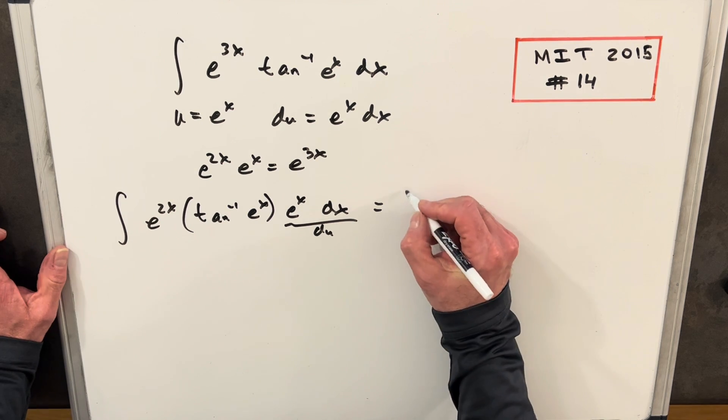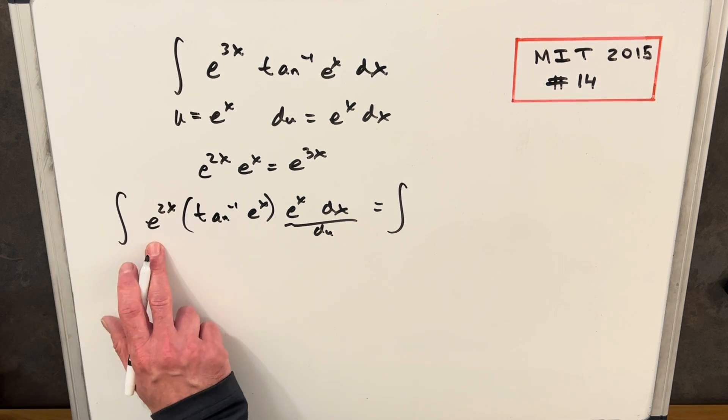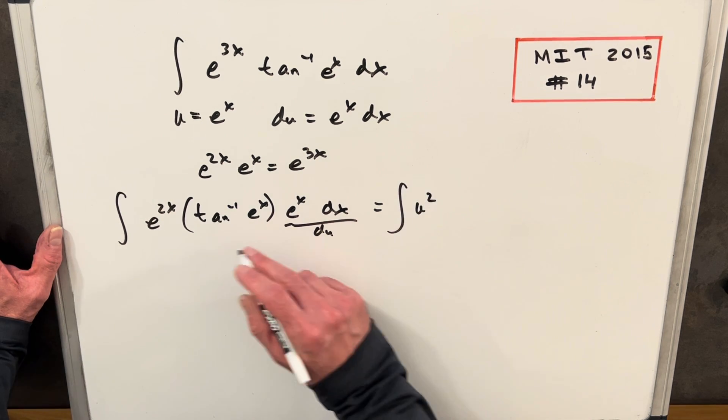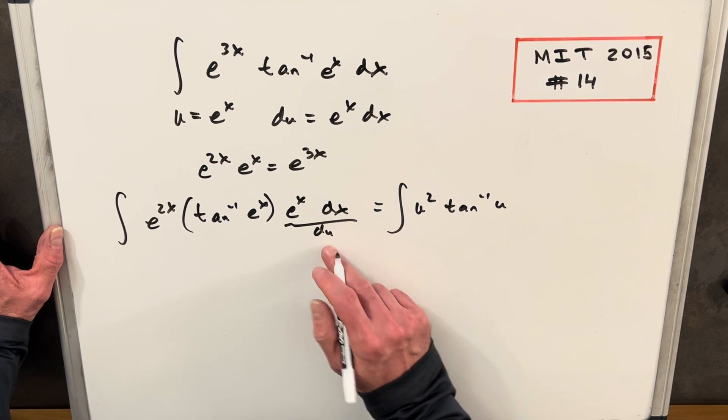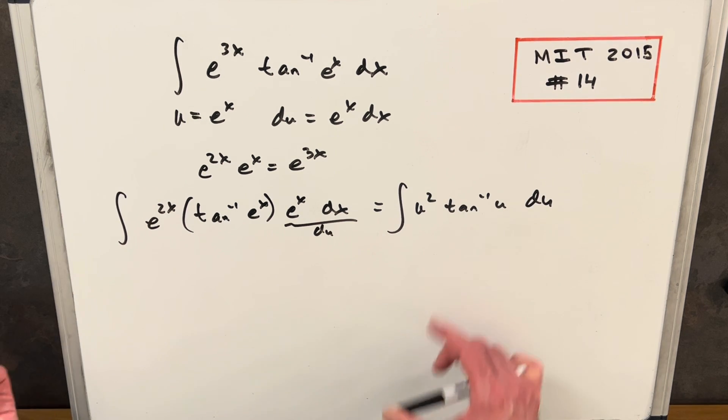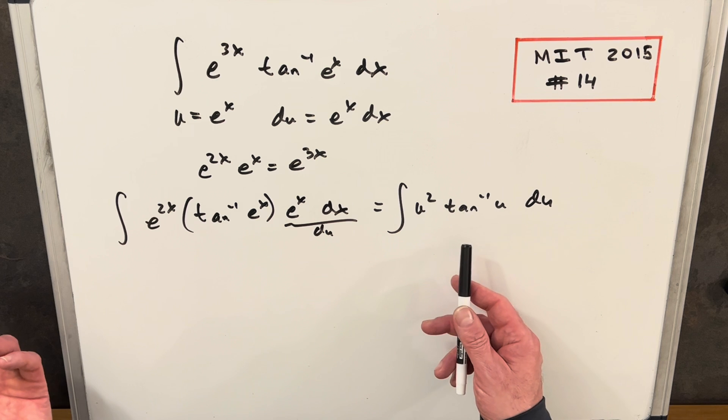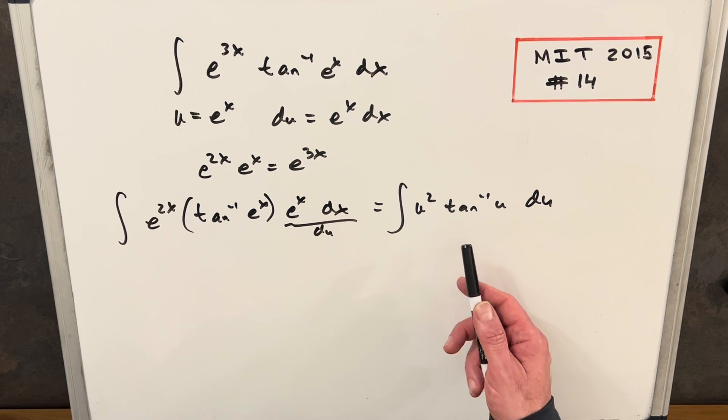So now when we make our substitution, this here is actually going to just be u squared, and then we're going to have tan inverse u, and then here's our du right here. Now we've got our e to the x side of the expression, but we still can't really integrate this, but we can use integration by parts, so let's set that up.